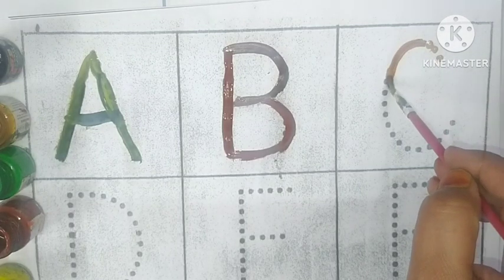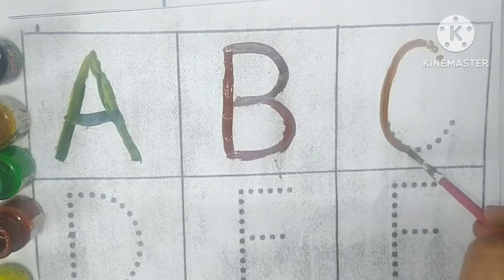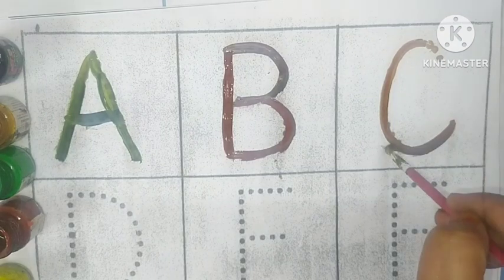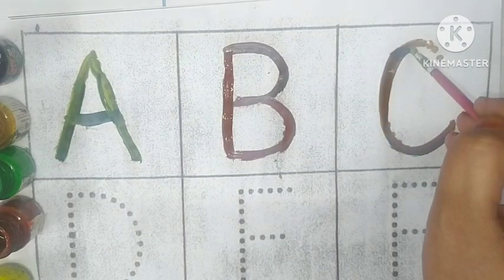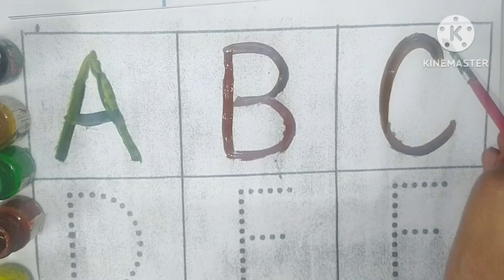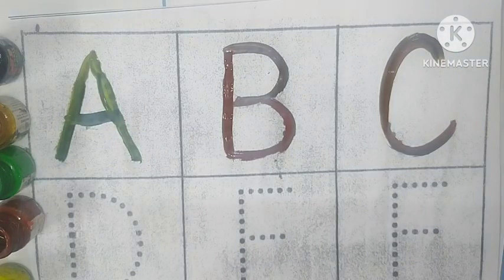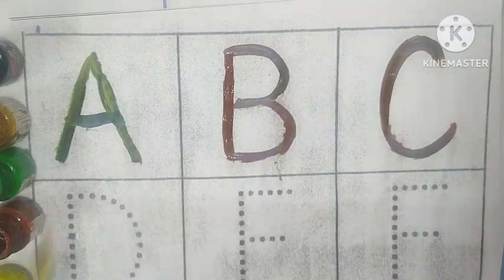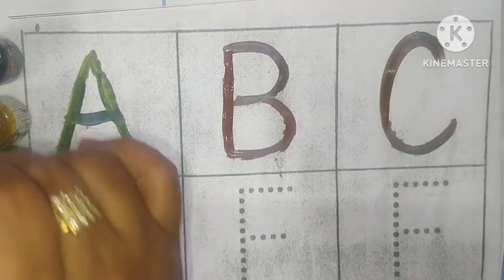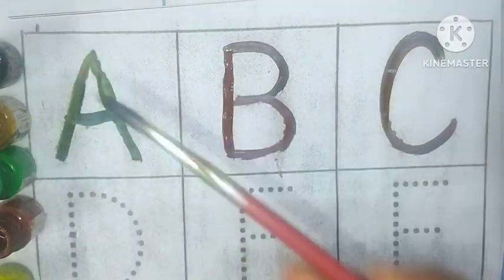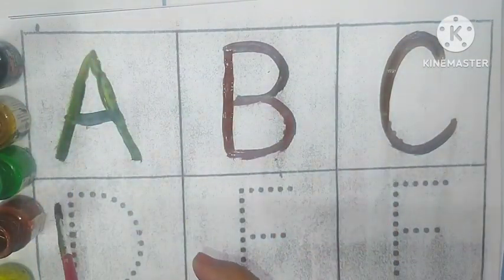C for Carrot. Carrot means gajar. Black. C for C.